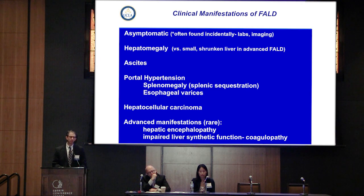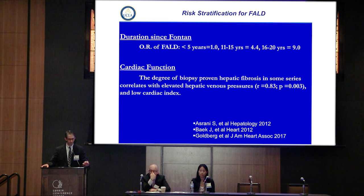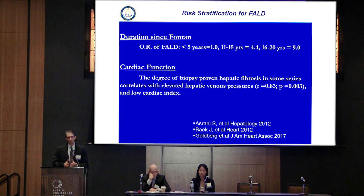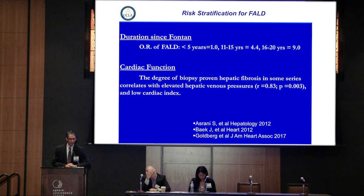When we try to think about these patients, one of the most important things we look at from a liver standpoint is duration from their Fontan. In single-center and multi-center studies, this has been shown to be true. The duration from the Fontan is probably the most significant risk factor for developing Fontan-associated liver disease. Patients over 10 to 15 years have a four-fold increase in developing liver disease, and then in the 15 to 20-year block, a nine-fold higher risk. Cardiac function in certain series has also been shown to predict or impact the risk of Fontan-associated liver disease and fibrosis over time.